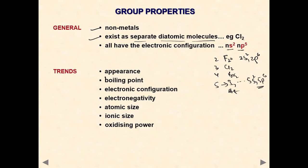Let's look at the key properties we need to study: appearance, boiling point, electronic configuration, electronegativity, atomic and ionic radii, and oxidizing power.